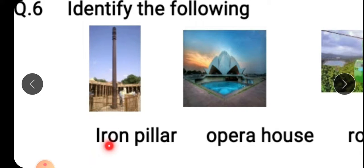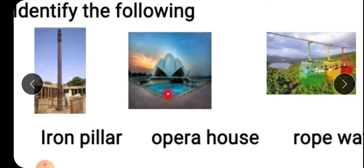Now the next is opera house. This opera house in Australia. And like this we have a building in Delhi that is called lotus temple, and this type of lotus temple in Australia is called opera house. The first picture is of iron pillar, the second picture is opera house.